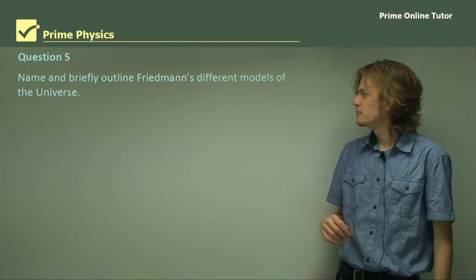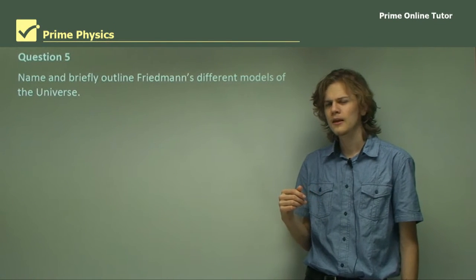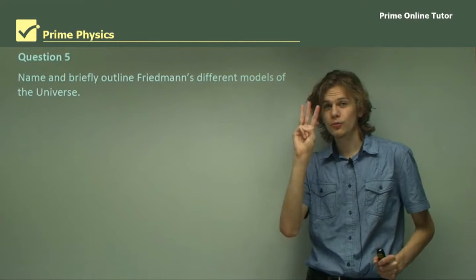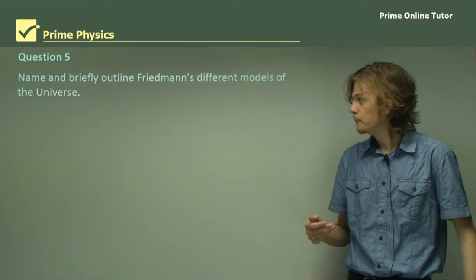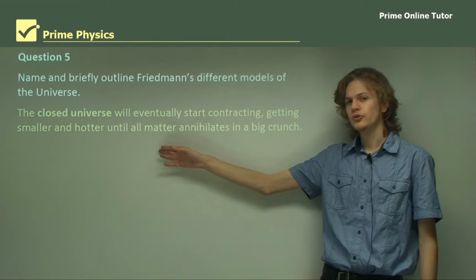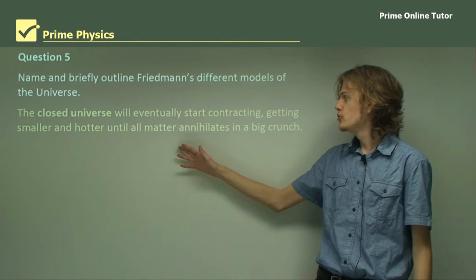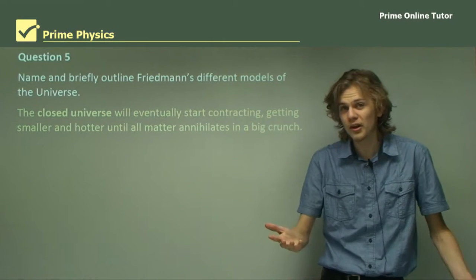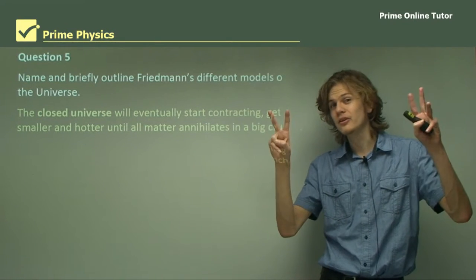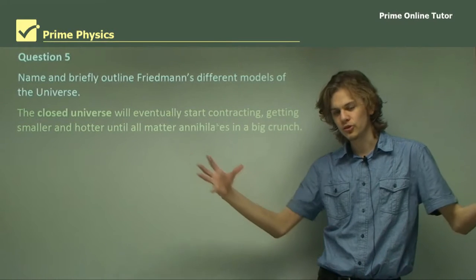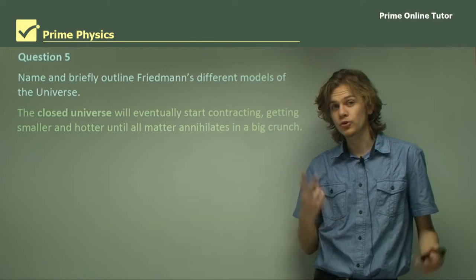Question five, name and briefly outline Friedman's different models of the universe. Now, if you can recall properly, there are in fact three models that Friedman predicted. Let's go through them. First of all, there was the closed universe, which was, of course, on that graph, the yellow line that goes up and then down. So the closed universe will eventually start contracting, if it hasn't already, getting smaller and hotter until all matter annihilates in a big crunch. And so that'll be at an infinitely small point. So that's the first one, the closed universe. There are two more.